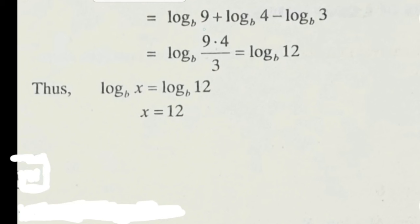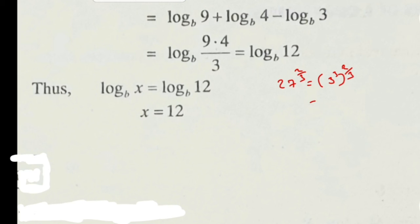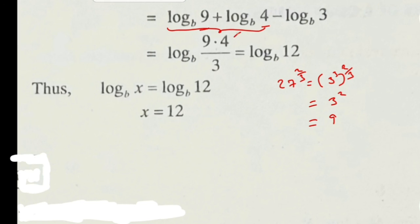Now, 27^(2/3) equals 9 because 27 = 3³, and 3³ × (2/3) gives exponent 2, so 3² = 9. Also, 2² = 4. By property 5, log_b(9) + log_b(4) = log_b(36), since 9 × 4 = 36.